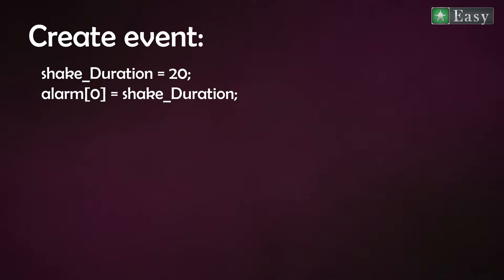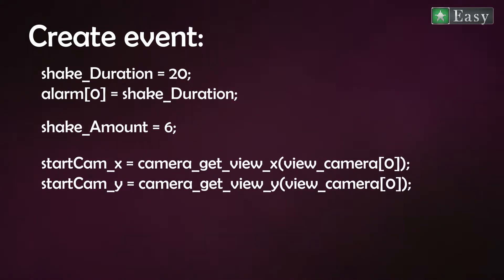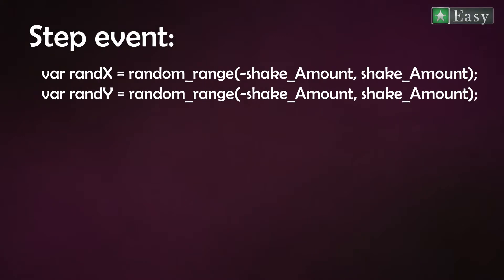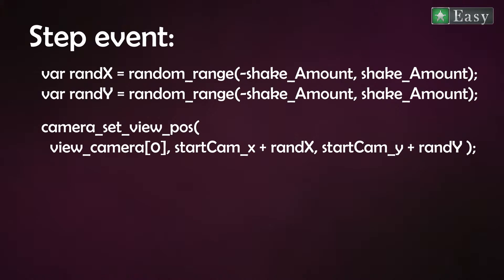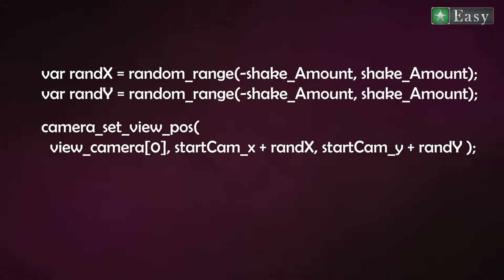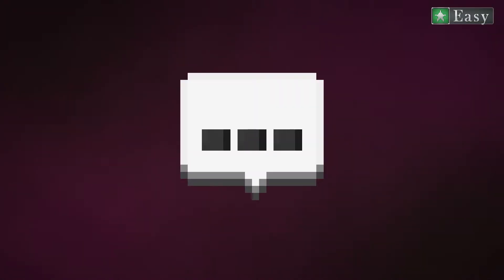So let's get into the mechanics. What is needed for setup? First, the duration of the shaking combined with an alarm. Second, the amount range to shake. And third, the start X and Y position of the camera. In the step event, you create two temporary variables that are added to the start X and Y position of the camera, then call the camera function camera_set_view_position — this updates the camera's position with the new X and Y coordinates. And that's basically it.